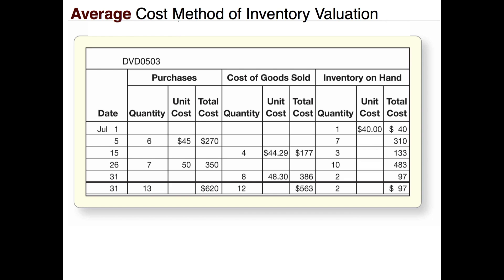To get the average cost of each item in ending inventory, we take the total cost currently in ending inventory of $310 and divide that by seven items, giving us a weighted average cost of $44.29.